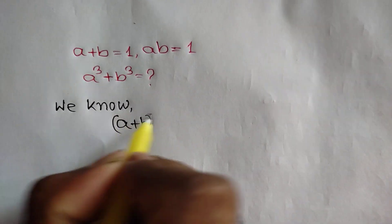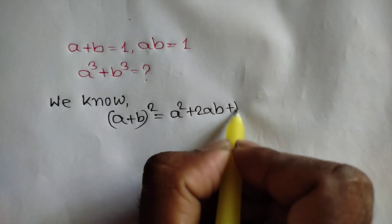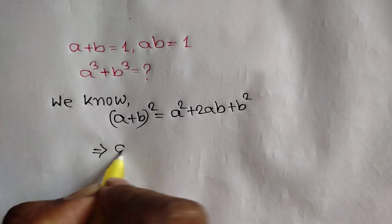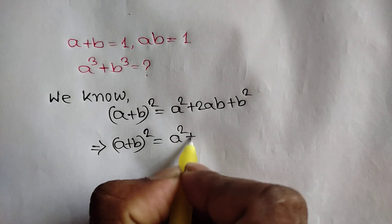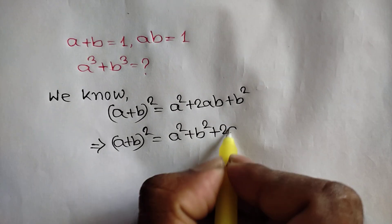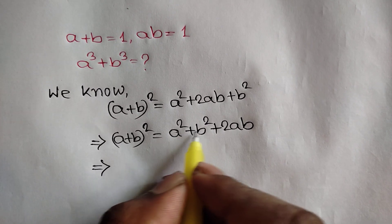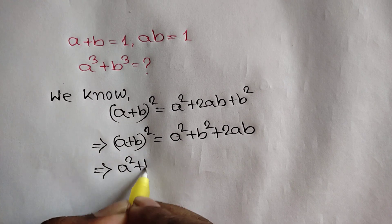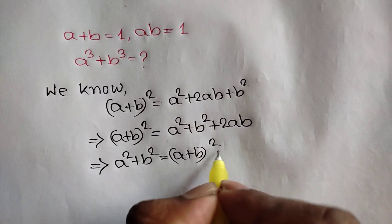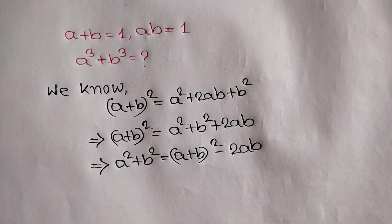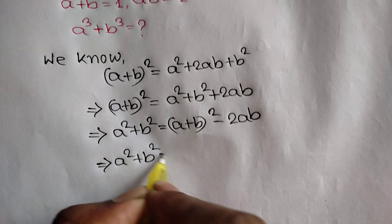We know that a plus b whole square is equal to a square plus twice ab plus b square. Rearranging, we can write a square plus b square plus twice ab. We need the value of a square plus b square, so a square plus b square is equal to a plus b whole square minus twice ab.